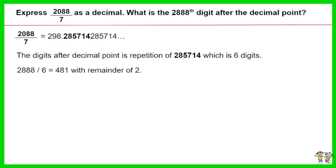2888 divided by 6 equals 481 with a remainder of 2. Thus the 2888th digit after the decimal point is 8.